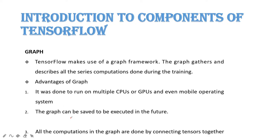Graph is another component. Using graph, you can gather some information. The advantage of using graph is we can run on multiple CPU or GPU, even on mobile operating systems. The graph can be saved and executed for future use — you can save your model and execute it further in the future. Computation of the graph is done by connecting the tensor nodes.